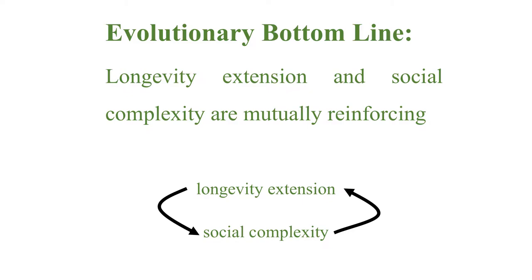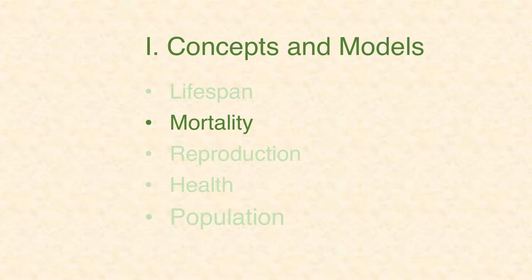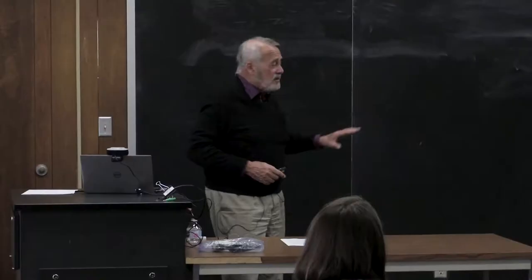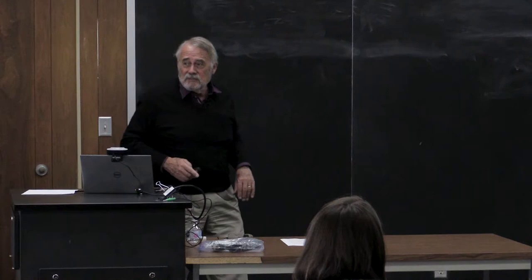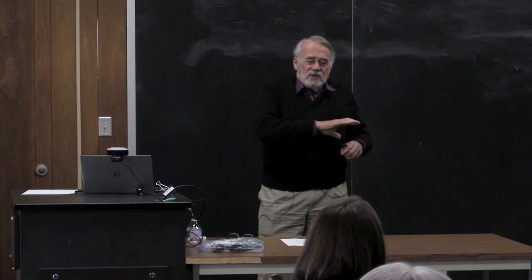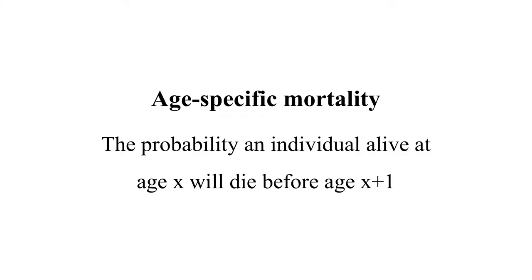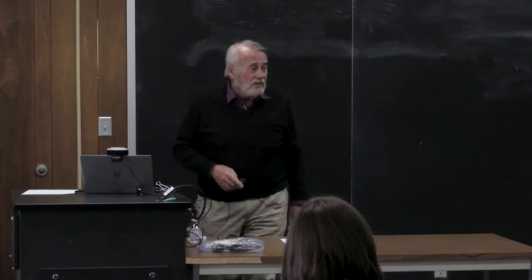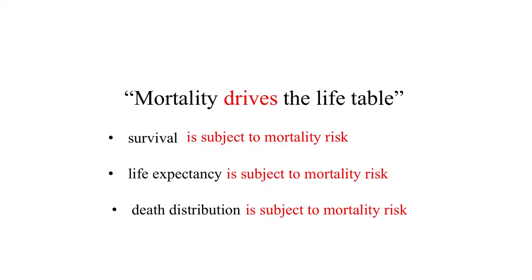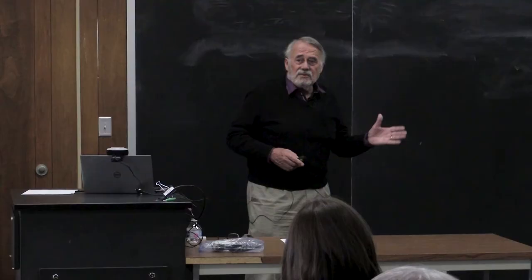Moving to mortality — many of you are demographers, so you know that the most important parameter in the life table is age-specific mortality, because it captures risk. It's the probability that an individual alive at age X will die before the next year. Mortality drives the life table: survival, life expectancy, and death distribution are all subject to mortality risk.